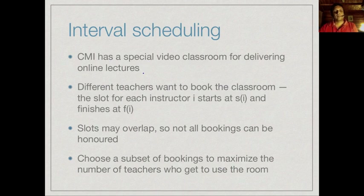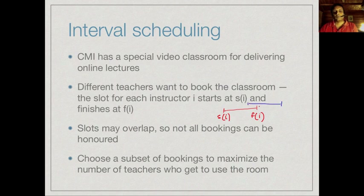Now let's look at a completely different problem called interval scheduling. Suppose we have a special video classroom where we can deliver online lectures. Different teachers want to book the classroom, and each instructor has a slot starting at time S_i and finishing at F_i. Two instructors may have overlapping slots — if the blue slot starts before the red slot ends, both cannot be booked since they interfere. Our task is to choose a feasible subset of bookings with no two interfering, so as to maximize the number of teachers who get to use the room.